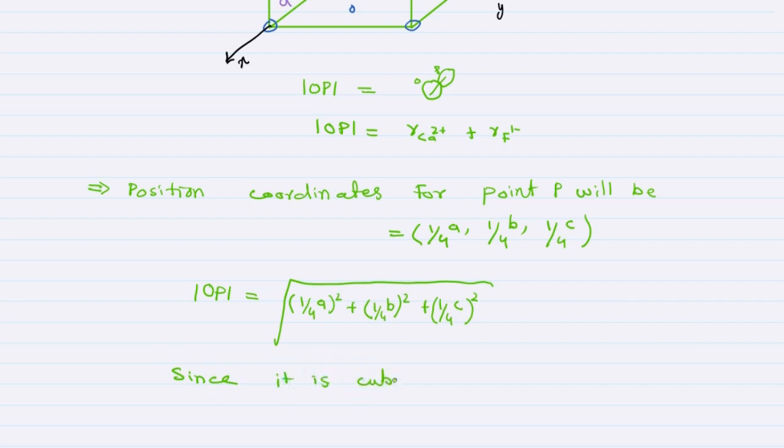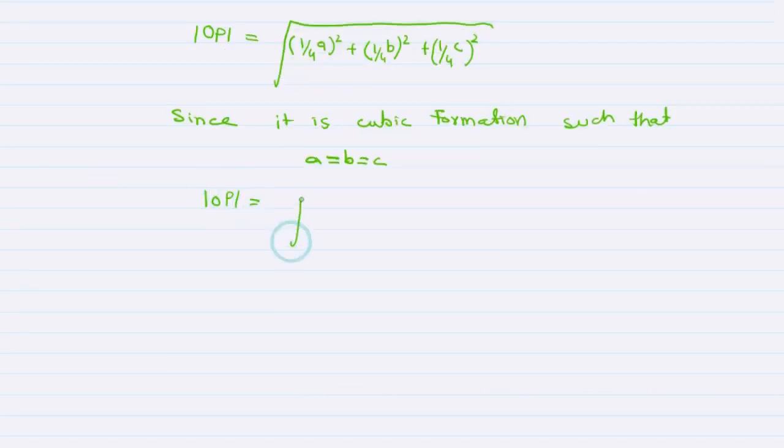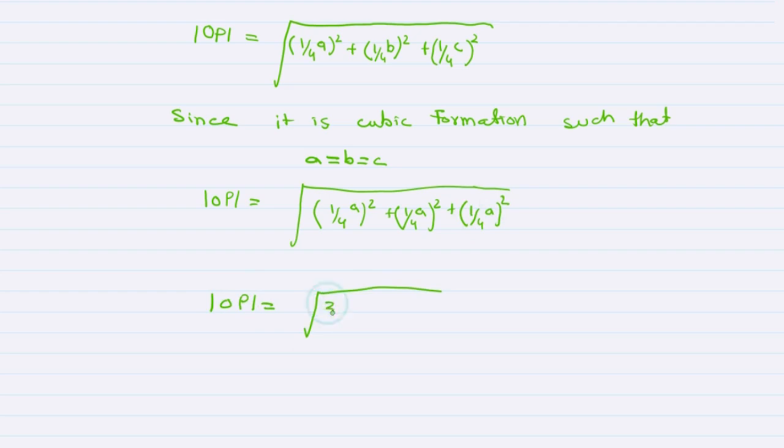Since it is a cubic formation, A equals B equals C. So OP equals the square root of [(1/4)A]² plus [(1/4)A]² plus [(1/4)A]², which becomes OP equals √3 times (1/4)A.